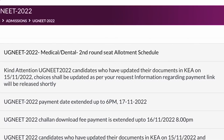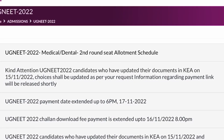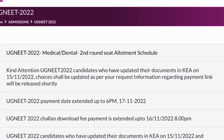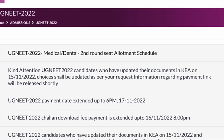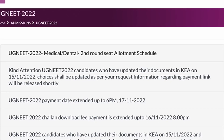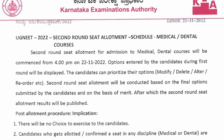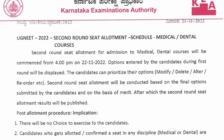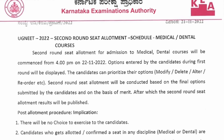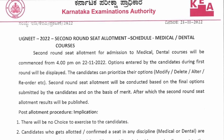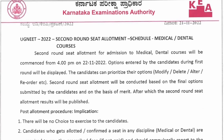Hi students, welcome to our YouTube channel. Today, the medical and dental second round seat allotment schedule has been published on the KEA website. Second round seat allotment for admission to medical and dental courses will commence from 4 PM on 22nd November.